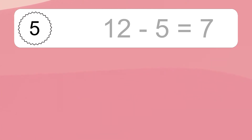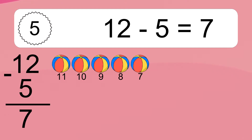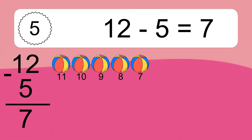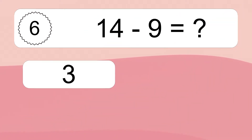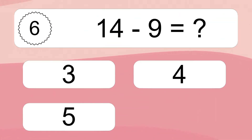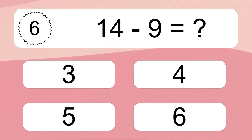12 minus 5 equals what? 12 minus 5 equals 7. Let's count it: 11, 10, 9, 8, 7.